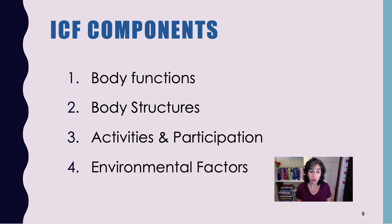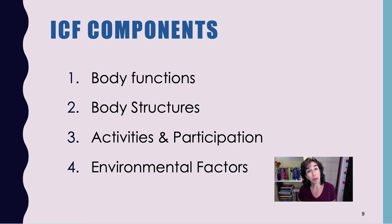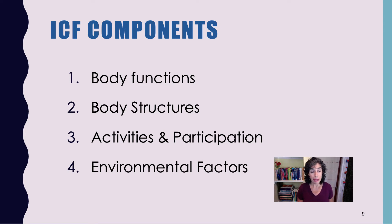Lastly, there are environmental factors, which includes all aspects of the external world that would impact a person's functioning. For example, curb cuts without textured paving may be coded as facilitating a wheelchair user's mobility. However, because it's not textured, it may actually be a barrier for someone who is blind. The categories of environmental factors include technology, natural and human-made changes to the environment, support and relationships, attitudes, and services, systems, and policies.